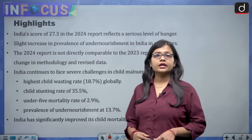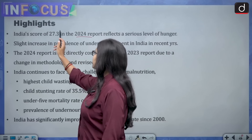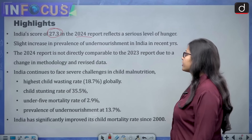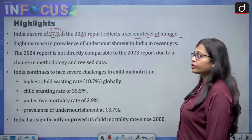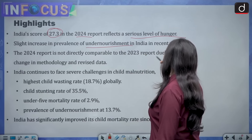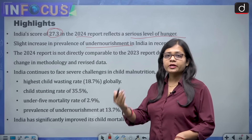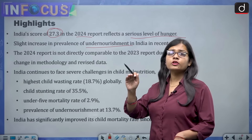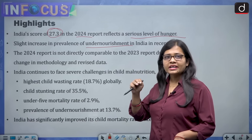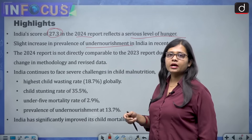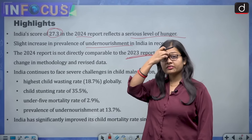The highlights of the Global Hunger Index 2024 report show India's score is 27.3, reflecting a serious level of hunger. There has been a slight increase in the prevalence of undernourishment in India in recent years — undernourishment meaning the level of nourishment is below the ideal or minimum bar. However, the 2024 report is not directly comparable to the 2023 report due to changes in methodology.